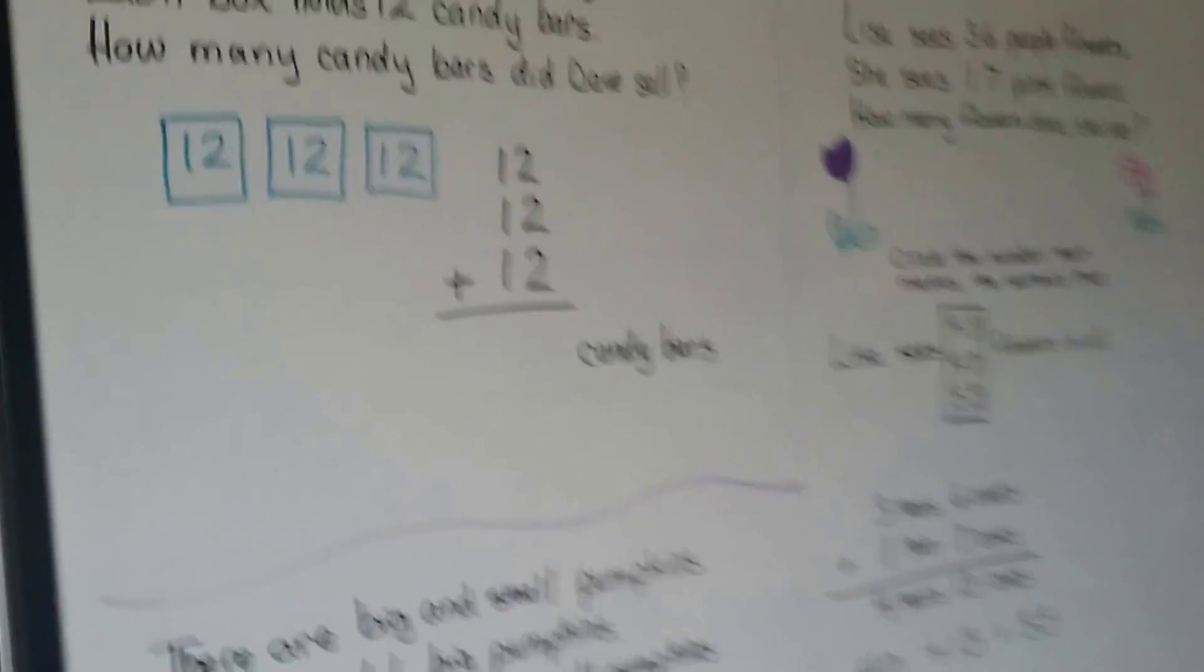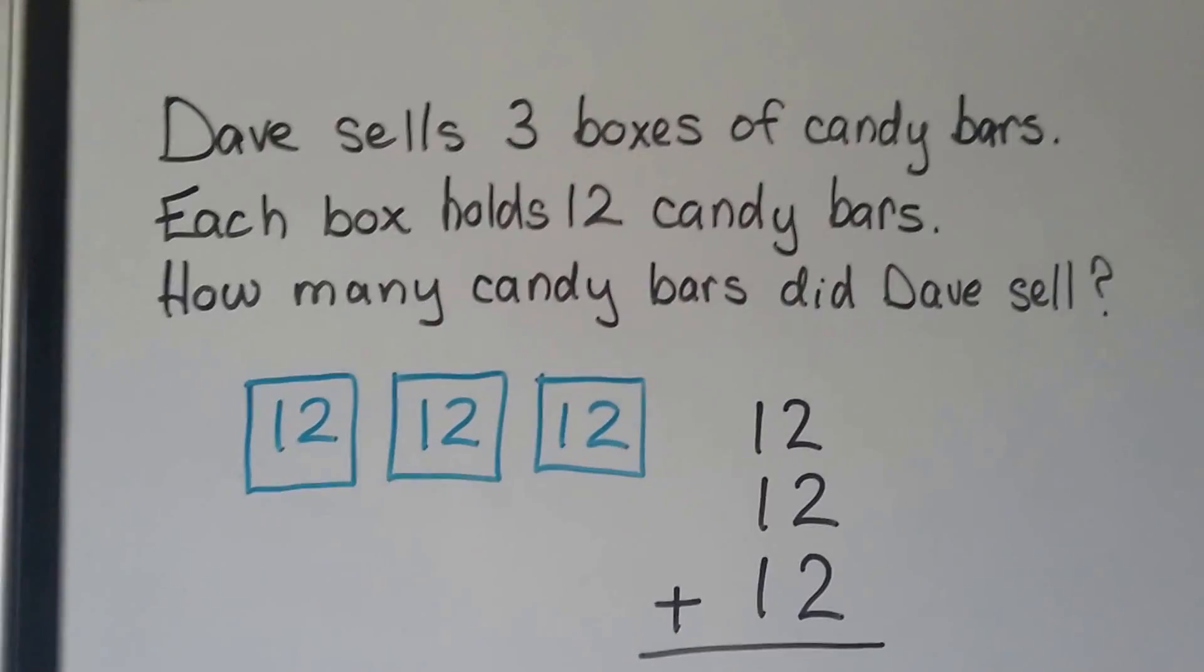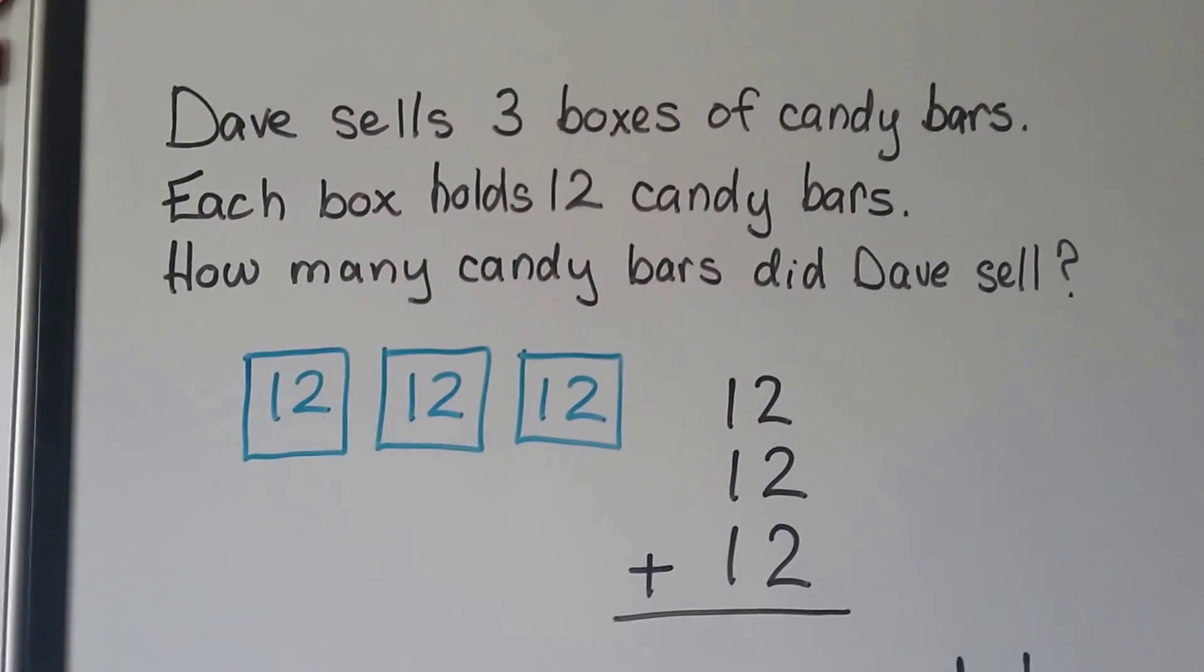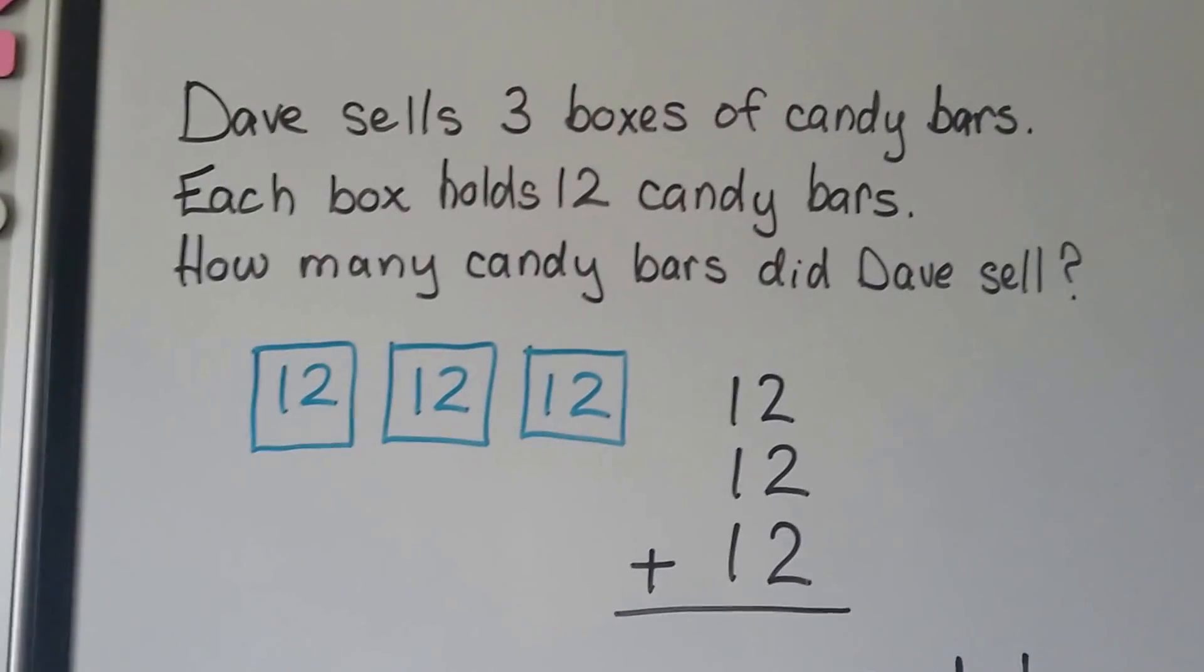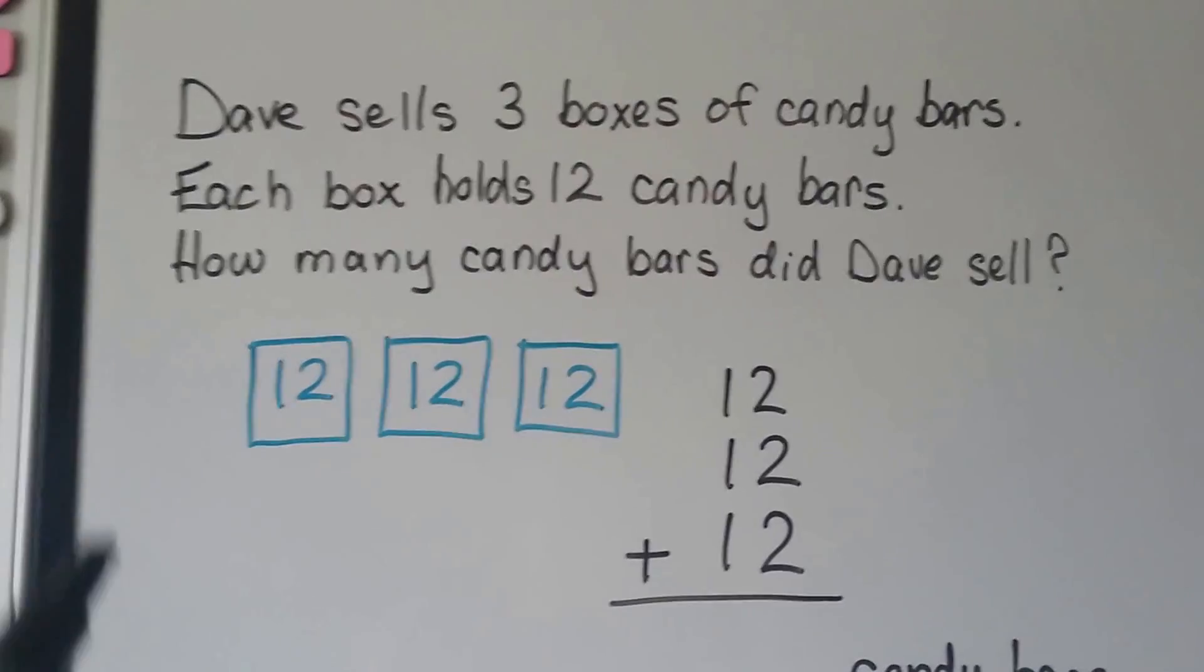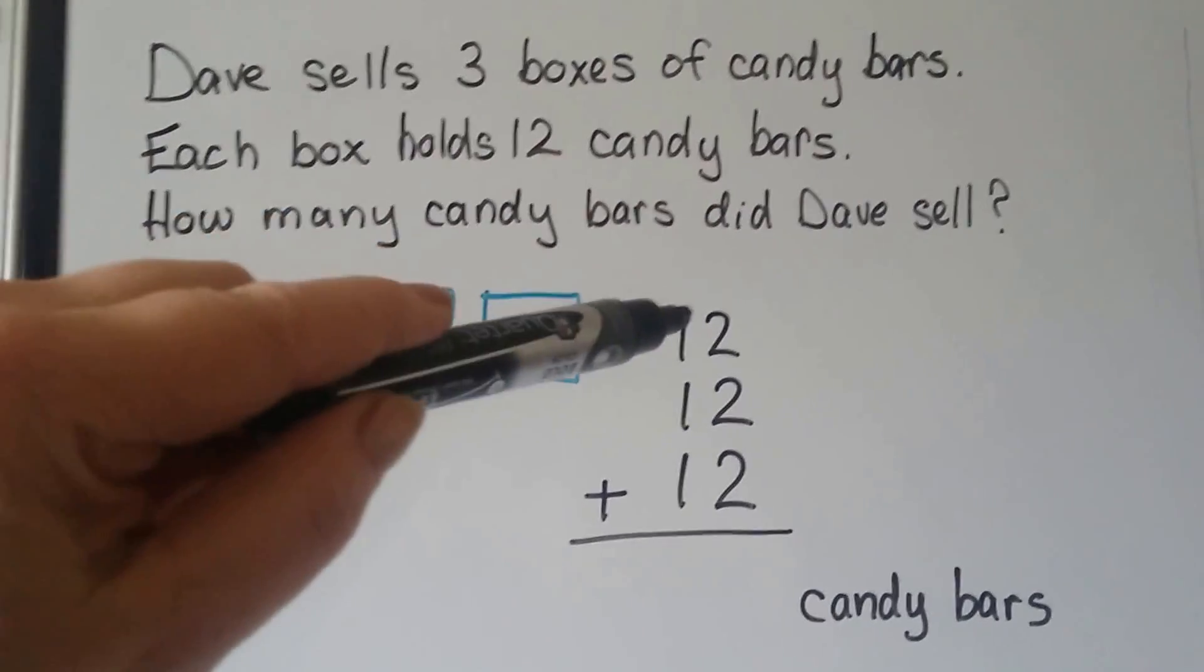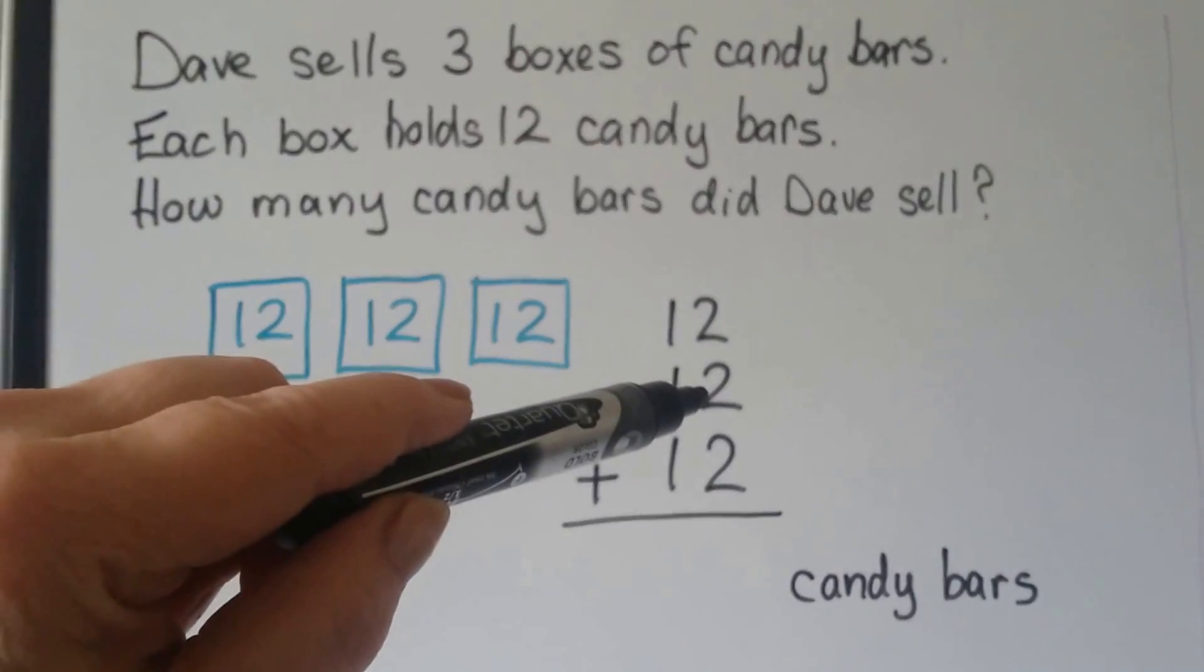I've got a couple more. Dave sells three boxes of candy bars. Each box holds twelve candy bars. How many candy bars did Dave sell? We can make three boxes and put a twelve inside of each one. He sold three boxes of candy bars and there's twelve in each box. That means we need to add twelve plus twelve plus twelve. We can add the twos that are in the ones place. Two plus two plus two.